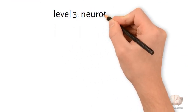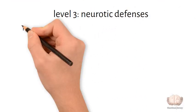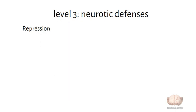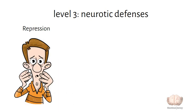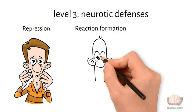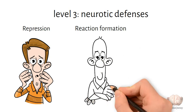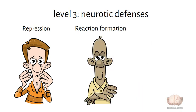Level three: neurotic defenses. Repression: blocking unpleasant memories, thoughts, or feelings from conscious awareness. For example, repressing memories of abuse or trauma. Reaction formation: expressing the opposite of one's true feelings. For example, acting extremely kind when actually feeling angry or hostile.